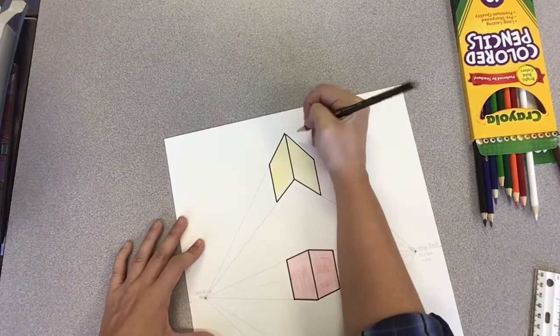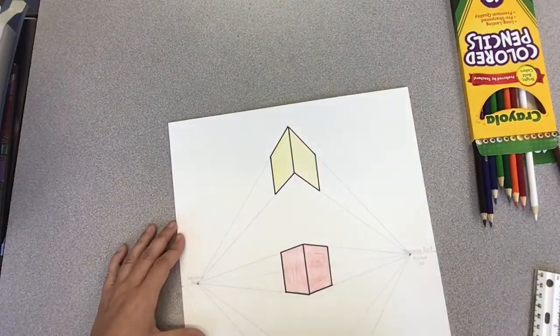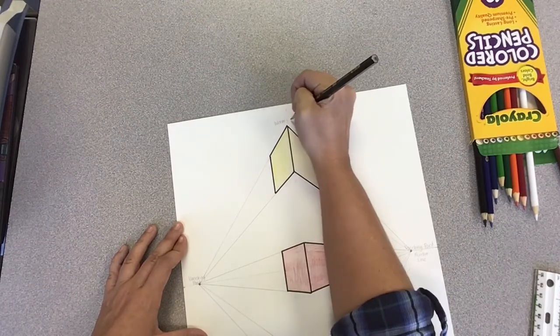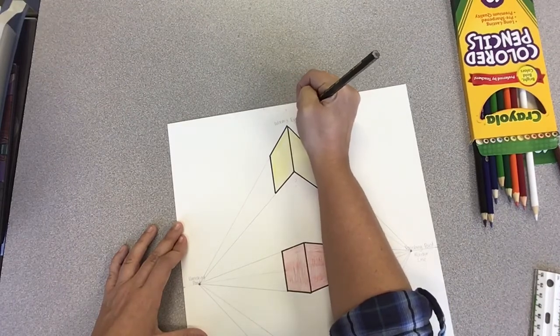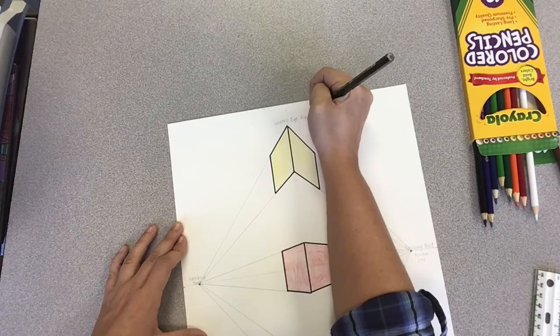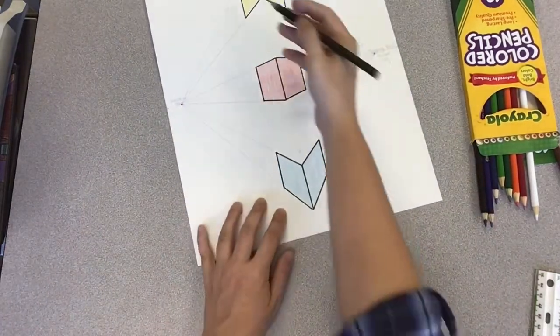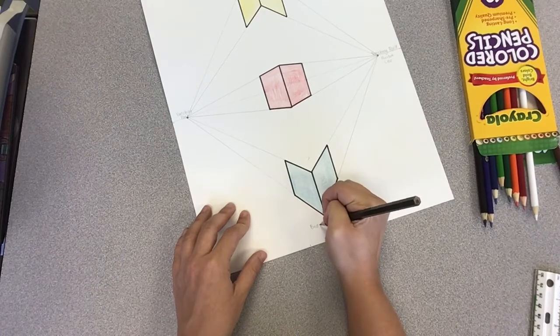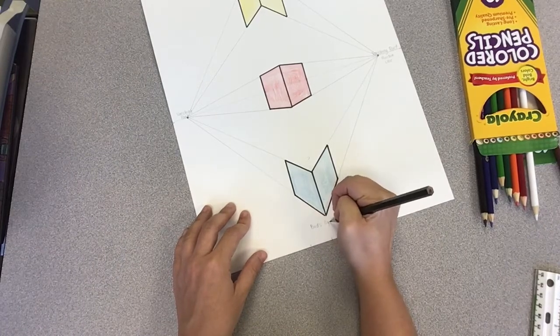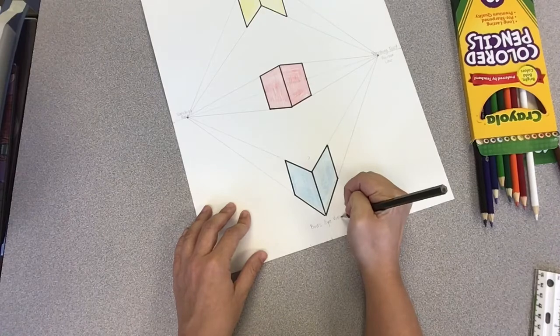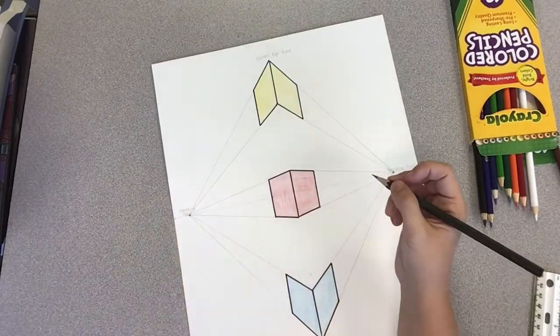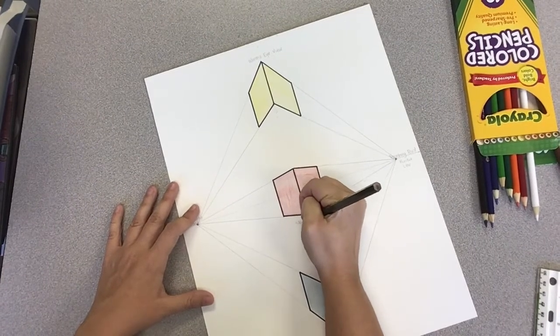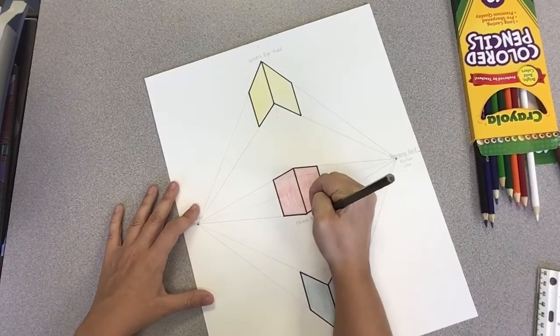So, there you have it all clearly laid out. You can label this one, which is above the horizon line, as your worm's eye view. This one below as your bird's eye view. Hi, Miss Judy. Hi. How are you? Good. Hold on. And then this one is street view.